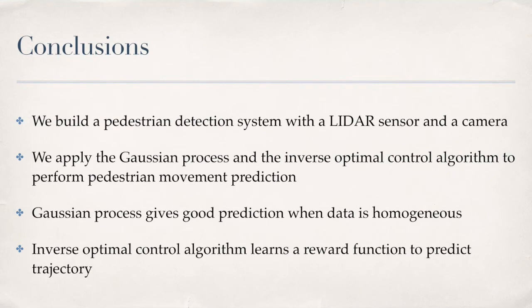In conclusion, we build a pedestrian detection system with a LiDAR sensor and a camera. We apply the Gaussian process and the inverse optimal control algorithm to perform pedestrian movement prediction. The Gaussian process gives good prediction when the data is homogeneous. And the inverse optimal control algorithm learns a reward function to predict trajectory.